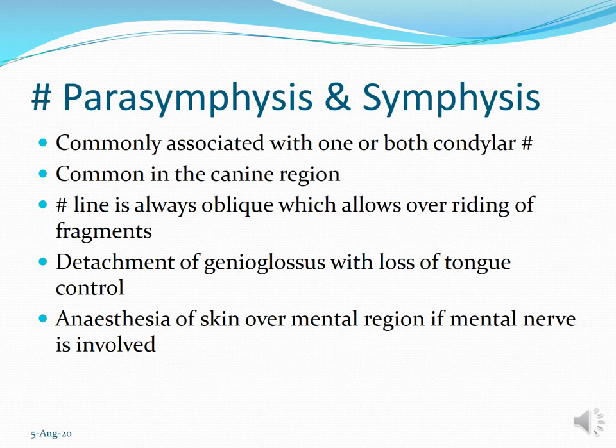Symphysis and parasymphysis fractures are commonly associated with one or both condylar fractures due to the contrecoup effect. They are common in the canine region and the fracture line is always oblique, allowing overriding of fragments — this is where favorable and unfavorable fracture classification comes into effect. Bilateral parasymphysis fracture with detachment of genioglossus muscles causing loss of tongue control is something to keep in mind, as is anesthesia of the skin over the mental region if the mental nerve is involved.